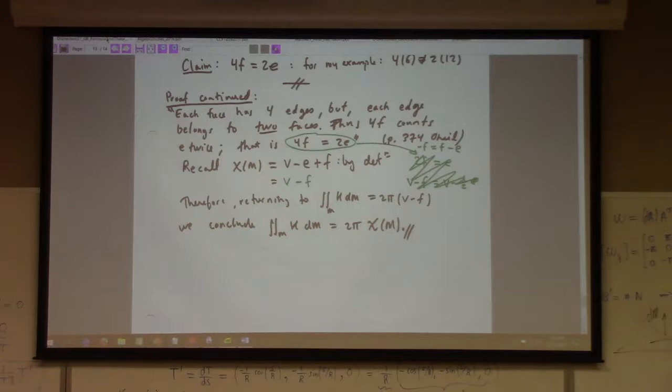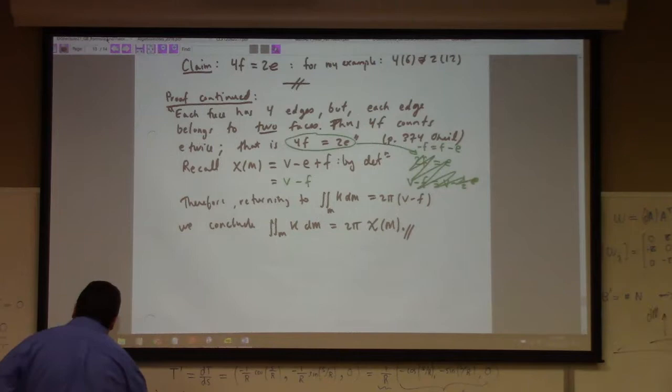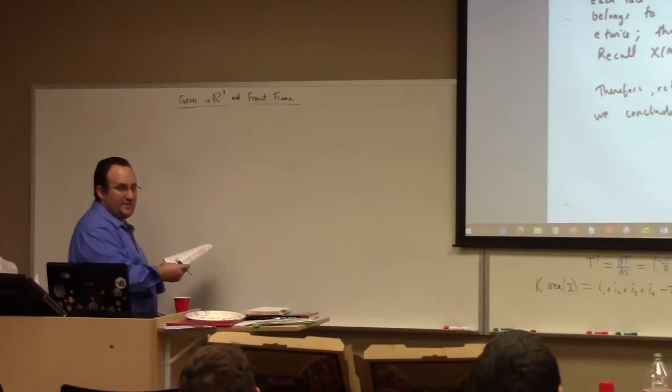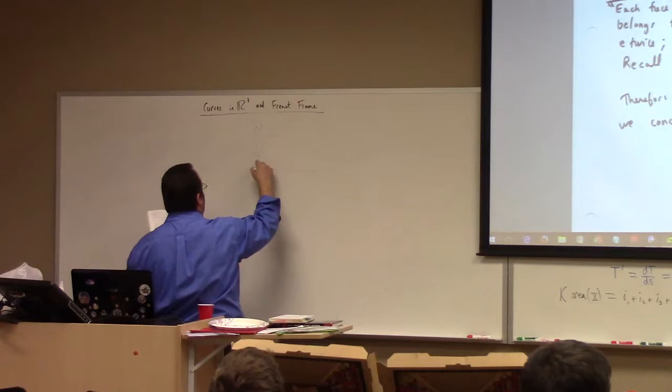You can take the rectangularization of one and basically transfer it over. Rectangularizations are much easier to think about than triangularizations, because they're rectangles and they naturally play together with our parameterization.